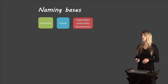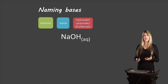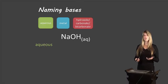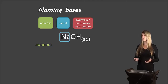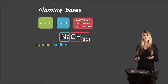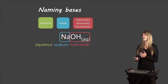Let's take a look at an example: NaOH. We start off by writing the word aqueous. The metal here is sodium — Na is sodium — so we write sodium. Then we notice that the anion is OH, which is hydroxide, so we write hydroxide. The full name is aqueous sodium hydroxide.